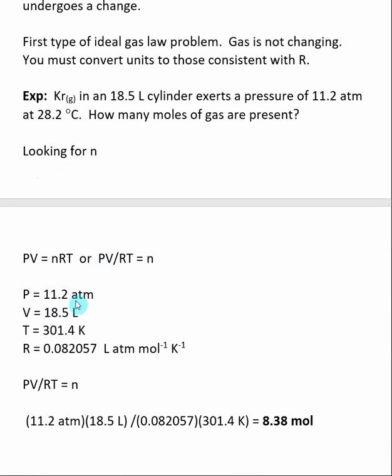The other variables were given. So pressure was given at 11.2 atm. The volume was given at 18.5 liters. The temperature we need to convert from degrees C to Kelvin. So after we do that, the temperature is 301.4 Kelvin. And then the R value, remember, we want to use the R value that's consistent with these units. So we use the version that is 0.08205.